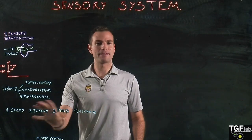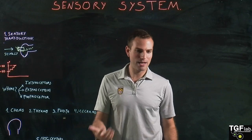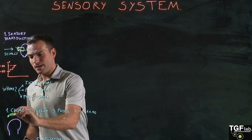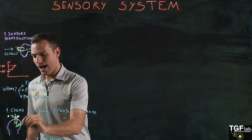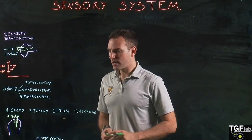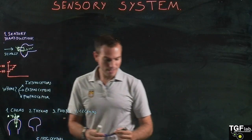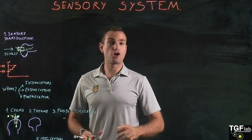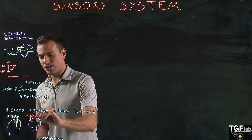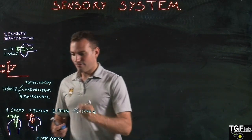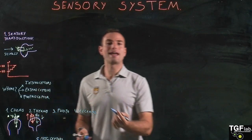In chemoreceptors, the receptor — which can be a cell or a neuron — has a chemical that binds to a specific ion channel, and this ion channel is activated to produce the graded potential. In thermoreceptors, the receptor has ionic channels that change permeability depending on temperature. If temperature increases, specific channels are activated; if temperature decreases, other channels sensitive to cold are activated.